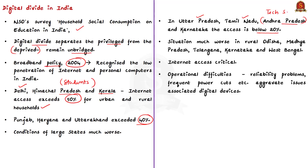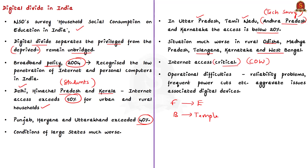Internet connectivity is even worse in rural areas in states like Odisha, Madhya Pradesh, Telangana, Karnataka and West Bengal. We have seen multiple photos on social media showing the plight of digitally vulnerable people — in one case, a father sold his cow to purchase a mobile device for his son. Internet access is critical as most advancements in any field are accessible only with internet, right from farming to education and from banking to temple darshan. Reliability problems and frequent power cuts further aggravate these issues.